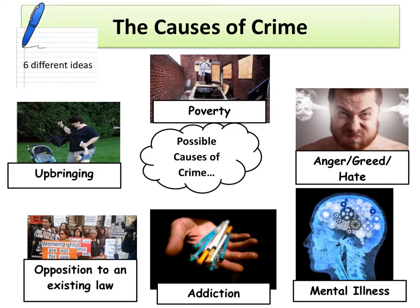The final cause of crime you need to know about is opposition to an existing law. This could be when people undertake criminal activity in order to oppose the government or a particular law in their country. A great example is civil rights protesters in America during the 1950s and 60s, who often protested by breaking the law — but only laws they saw to be unjust. This led to the government having to change the law and the abolishing of segregation in America.